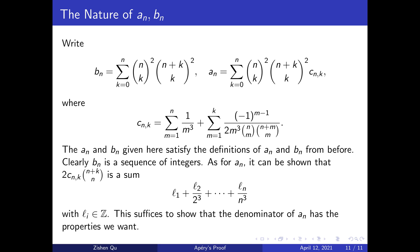Clearly, b_n are integers in this explicit form. As for a_n, we can show that 2c_{n,k} times (n+k choose n) is a sum of the following form, which gives us the denominator divisibility condition. This can be done by considering the order of the primes dividing this term.